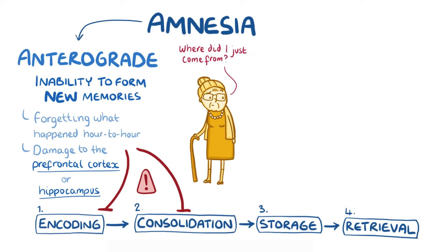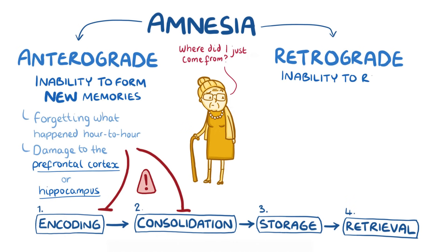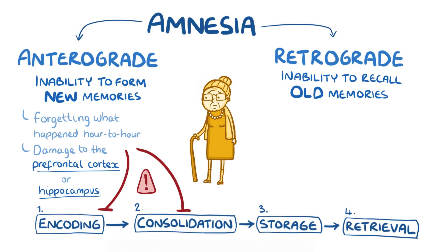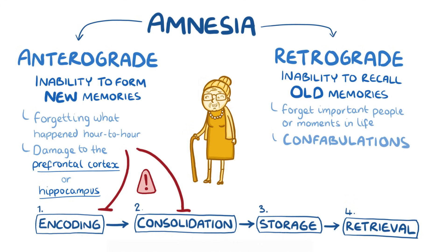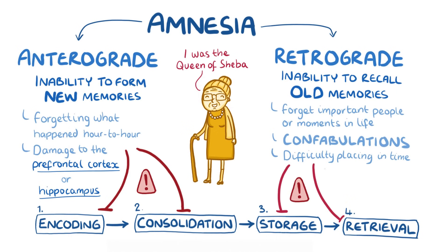The second, and probably most well-known type of amnesia, is retrograde amnesia, and it refers to an inability to recall old memories. This can cause anxiety for individuals with retrograde amnesia, as well as friends and family, as they completely forget important people or moments in their life. Often, individuals might create false memories called confabulations, or they might have difficulty placing a specific memory in time. Retrograde amnesia is usually because of a problem in the storage or retrieval stage, and typically results from damage to the cortex, but it could involve the prefrontal cortex or hippocampus as well.